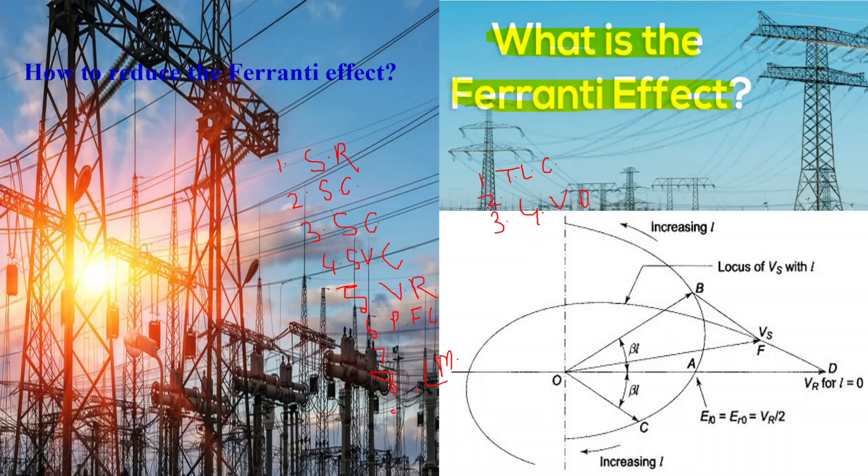Ninth, transmission line design. Optimizing the design parameters of the transmission line such as conductor spacing, insulation, and tower configuration can help reduce capacitance and inductance, thereby mitigating the Ferranti effect.